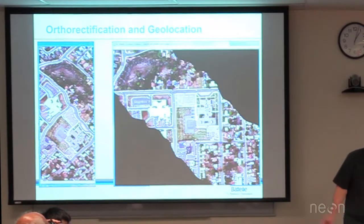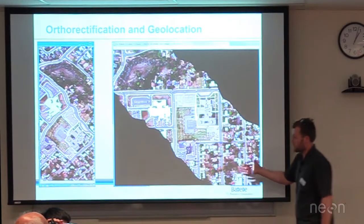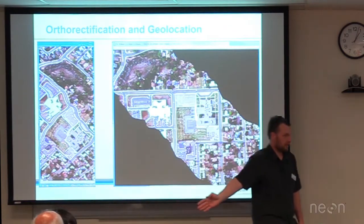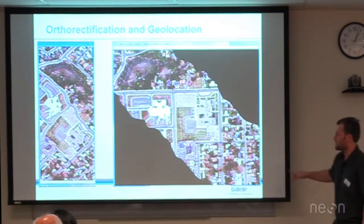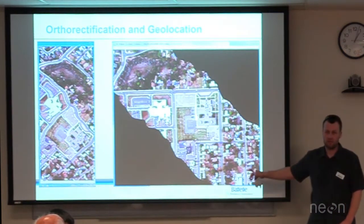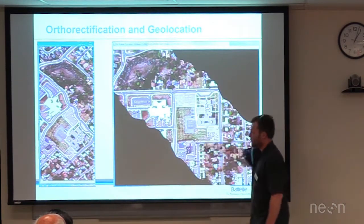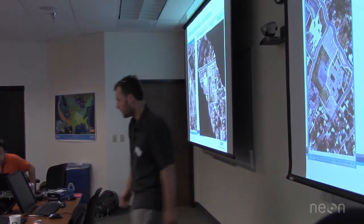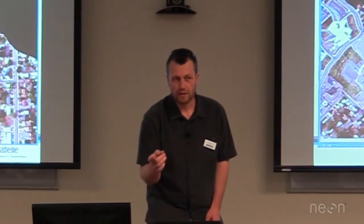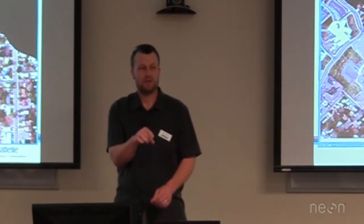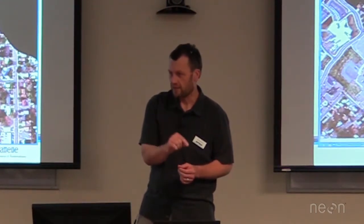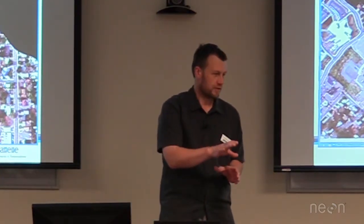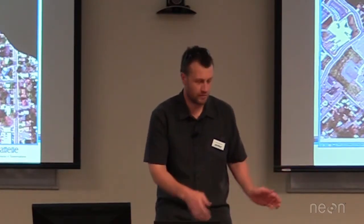Starting with orthorectification — this is raw data that comes out of the sensor. There's no location information here at all; it looks like a mess. We have to get to something where each pixel is on a uniform grid so that if we flew another flight line we could compare pixels one on top of each other. A key thing here is that our sensor is bolted down into the aircraft, so we have to know exactly where the aircraft is at every exact time. If the time is off, where that sensor is pointing is completely wrong and we can't get it down onto the ground on the right spots.